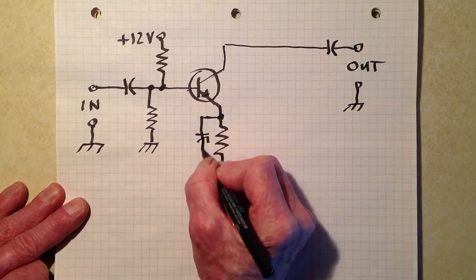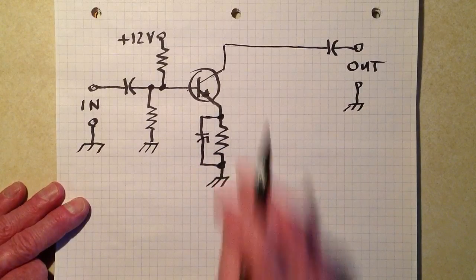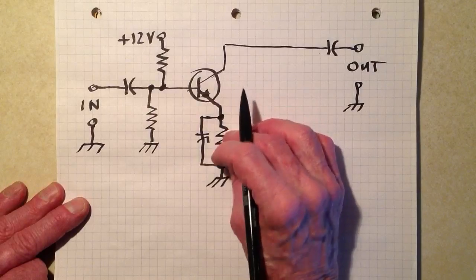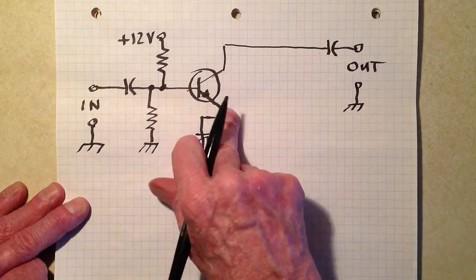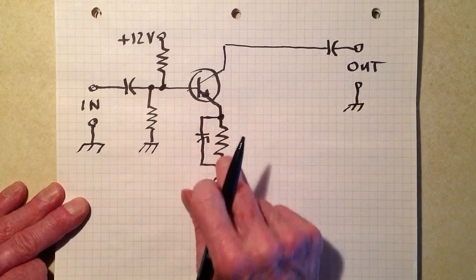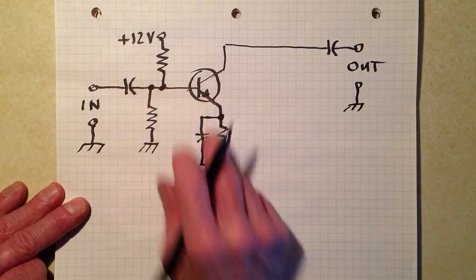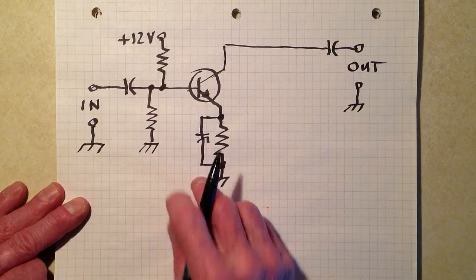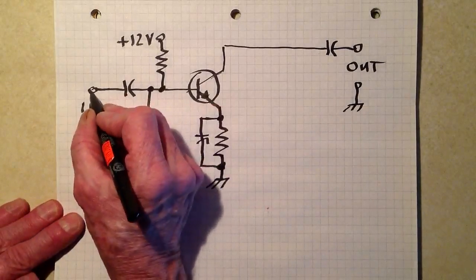Now the purpose of this capacitor here across this resistor is to provide a good DC bias for the transistor, without letting signal flow and disrupt the operation of the transistor by kind of a bounce back effect that you would get.